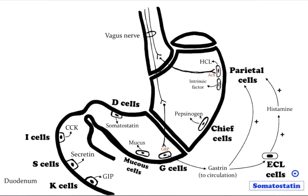Chief cells release the zymogen pepsinogen when stimulated by a variety of factors including cholinergic activity from the vagus nerve and acidic conditions in the stomach.